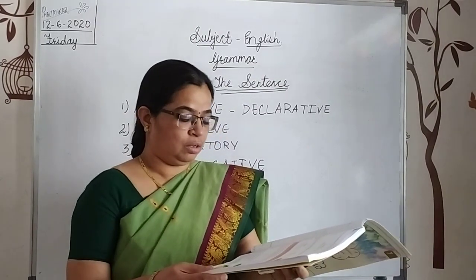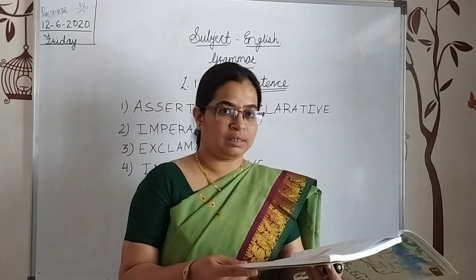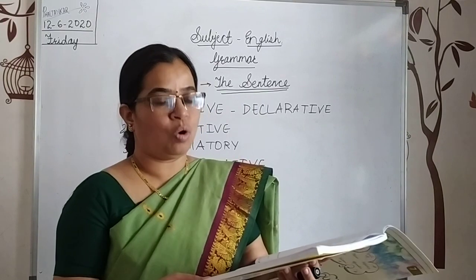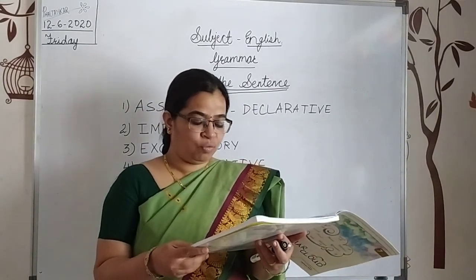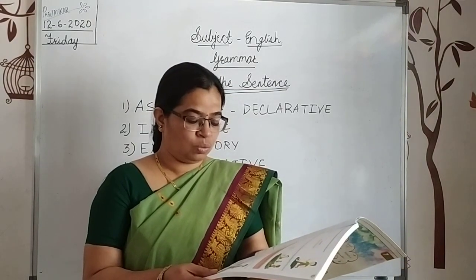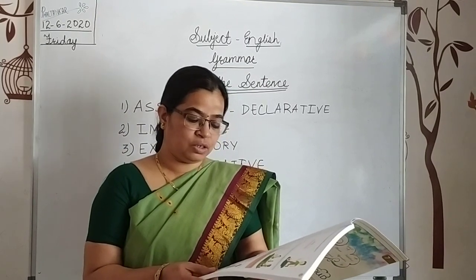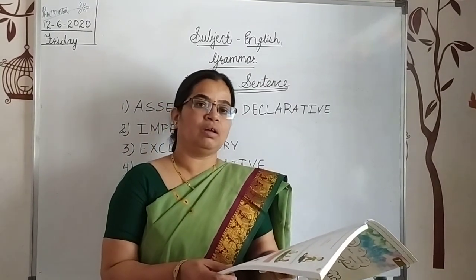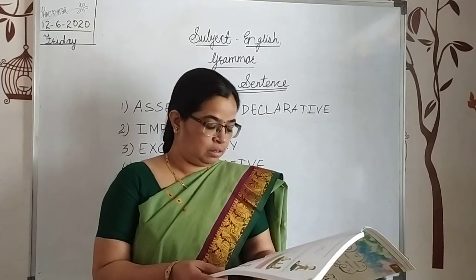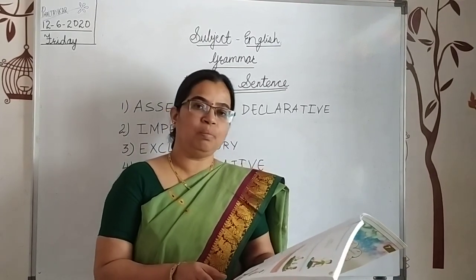The fourth sentence: 'The peon rings the bell.' The subject is 'the peon,' 'rings the bell' is the predicate, 'rings' is the verb, and 'the bell' is the object. Fifth sentence: 'Rainfall is essential for a harvest.' Here 'rainfall' is the subject and 'is essential for a harvest' is the predicate — underline it.